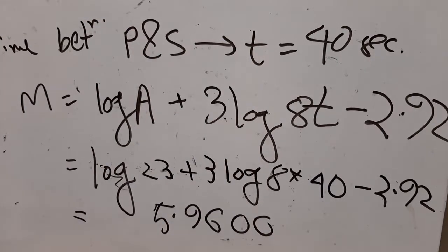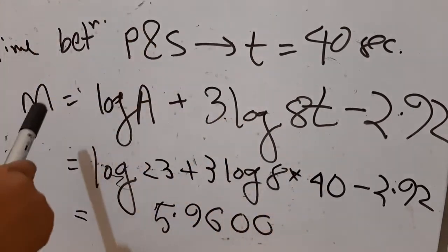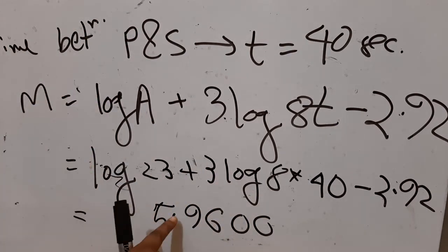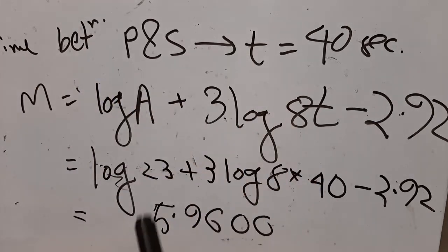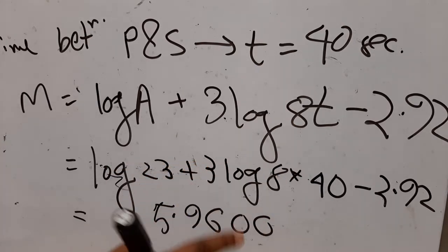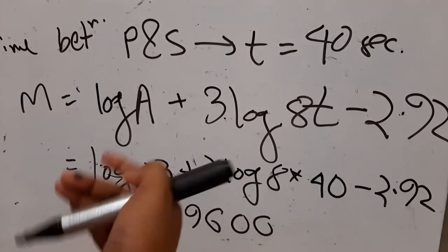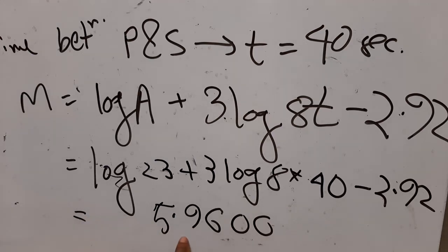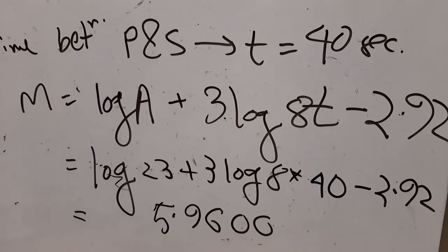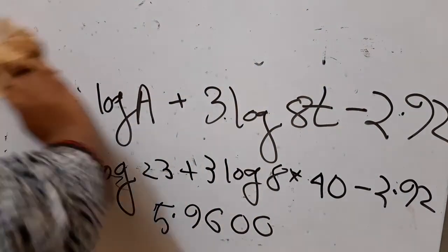When writing magnitude in the Richter scale, you must always express the value to four decimal places. If there are fewer than four decimal places, add zeros. So our answer is 5.9600. Now we need to classify what type of earthquake this is based on the Richter scale categories.